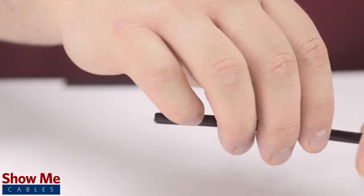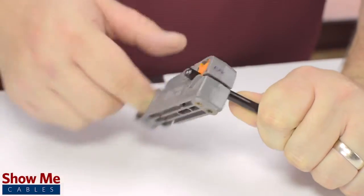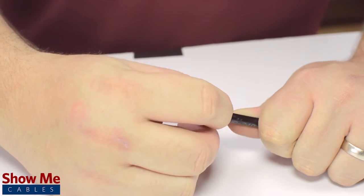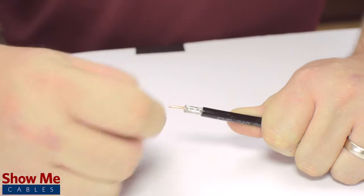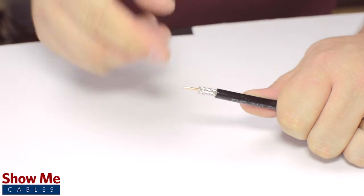First, slide the ferrule onto the outside jacket, then strip back the jacket and dielectric using the strip tool. The advantage of using a coax stripper is that it will strip back the jacket and dielectric at the same time, but in general the jacket should be stripped about half an inch and the dielectric down to about a quarter of an inch.